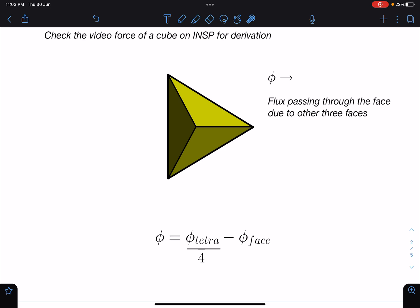What I am doing is this flux which is due to other 3, it is nothing but the net flux which is passing through this, that is sum of the remaining 3 and the face itself. So this will come this side.